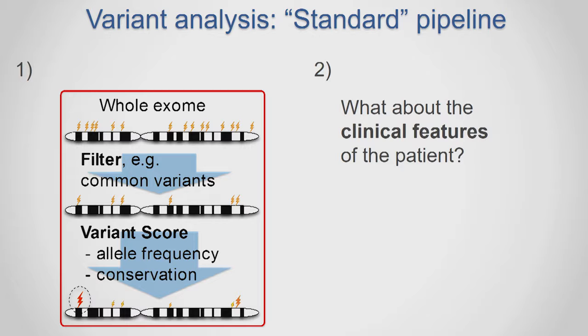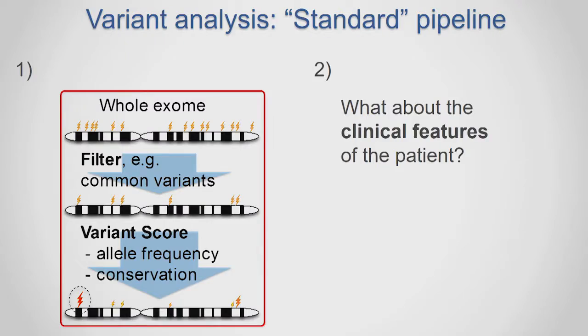In a standard clinical pipeline one would first filter these variants — for example, filtering out all the common variants — and afterwards assign a variant score to each variant based on genomic features such as allele frequency or conservation. But the point is that such a pipeline does not take the clinical features into account.